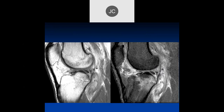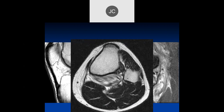Looking at these sagittal images, I think there's anterior subluxation of the tibia relative to the femur — concern for an ACL tear with trabecular injury at the posterolateral corner. The popliteus tendon looks torn from its attachment. Here's the popliteus muscle — torn with a lot of hemorrhage in it and a lot of bone edema. Here we can see the popliteus muscle tear, which is not an uncommon injury — it's something you have to look for; it's easy to miss.